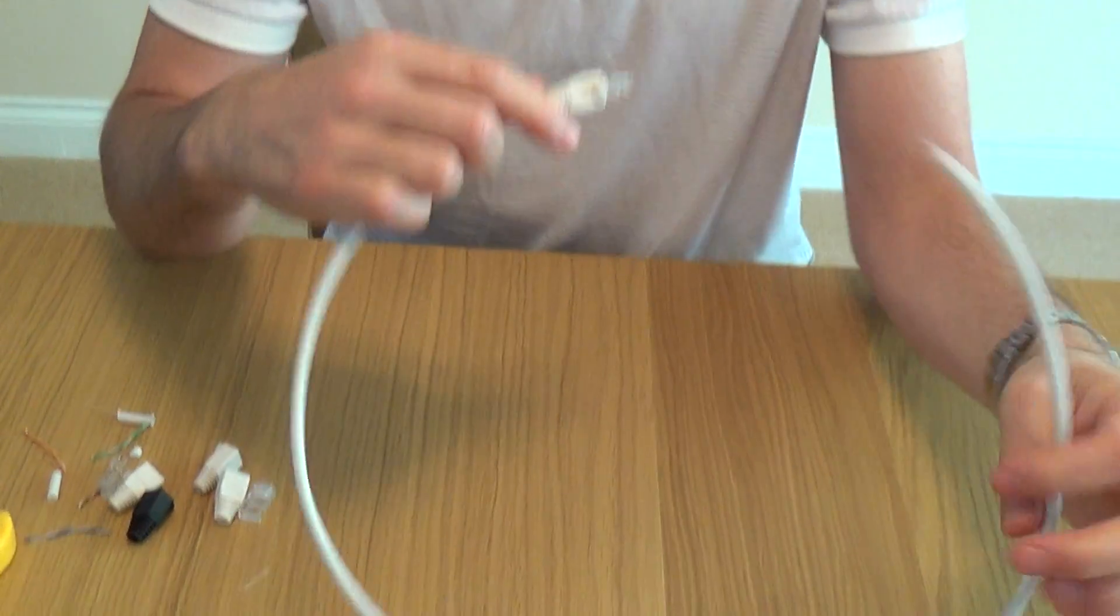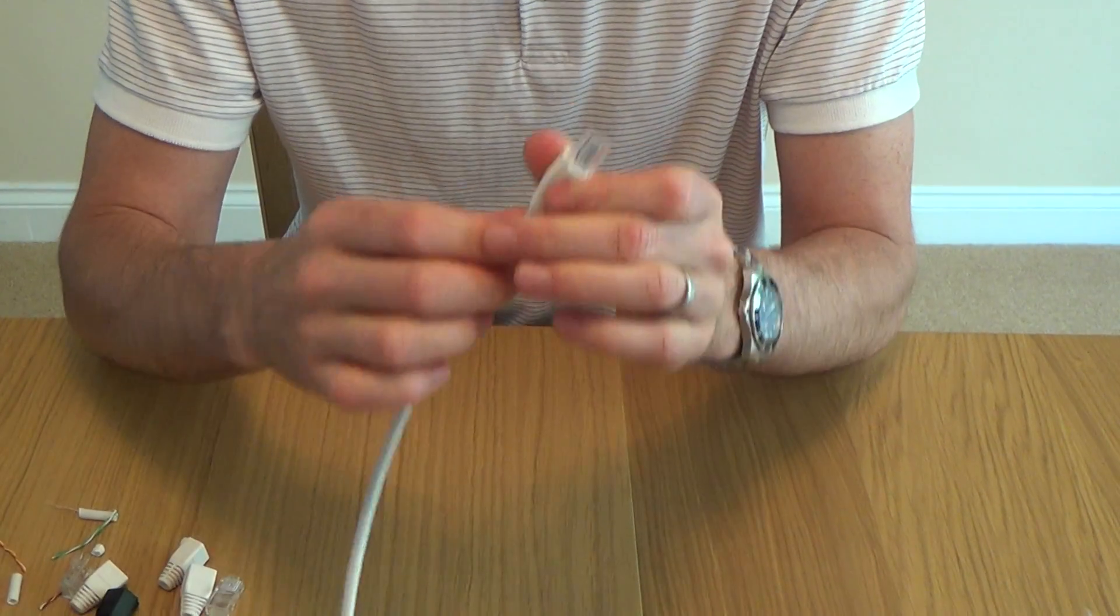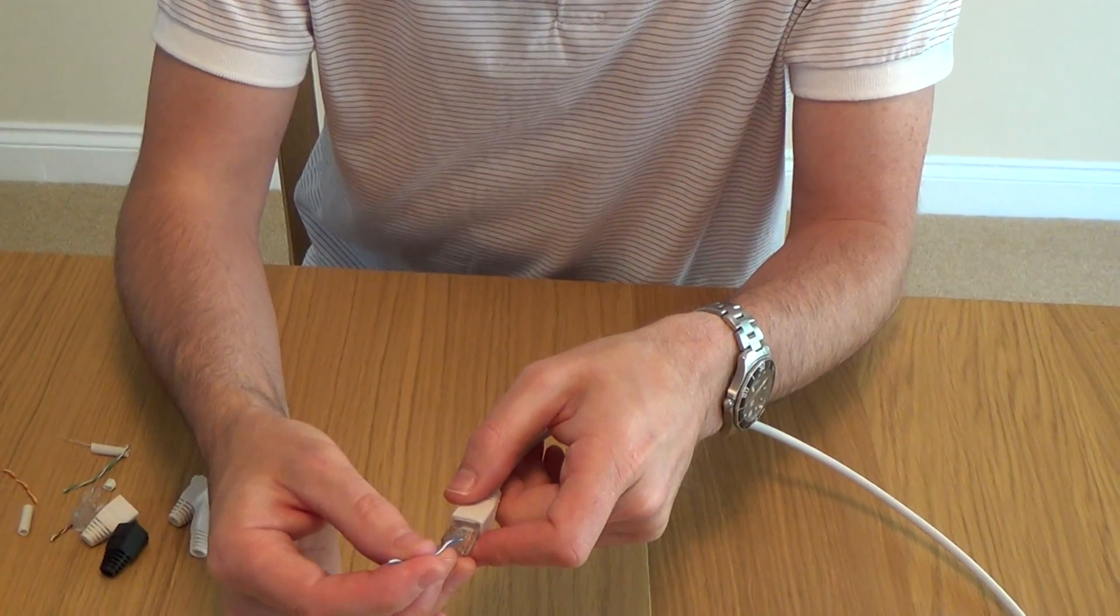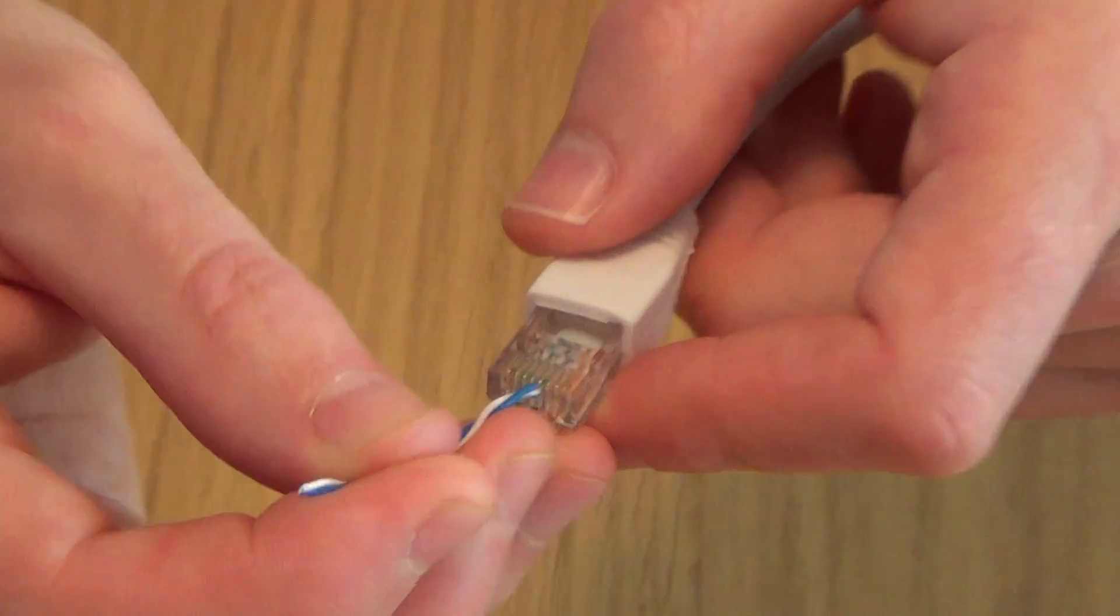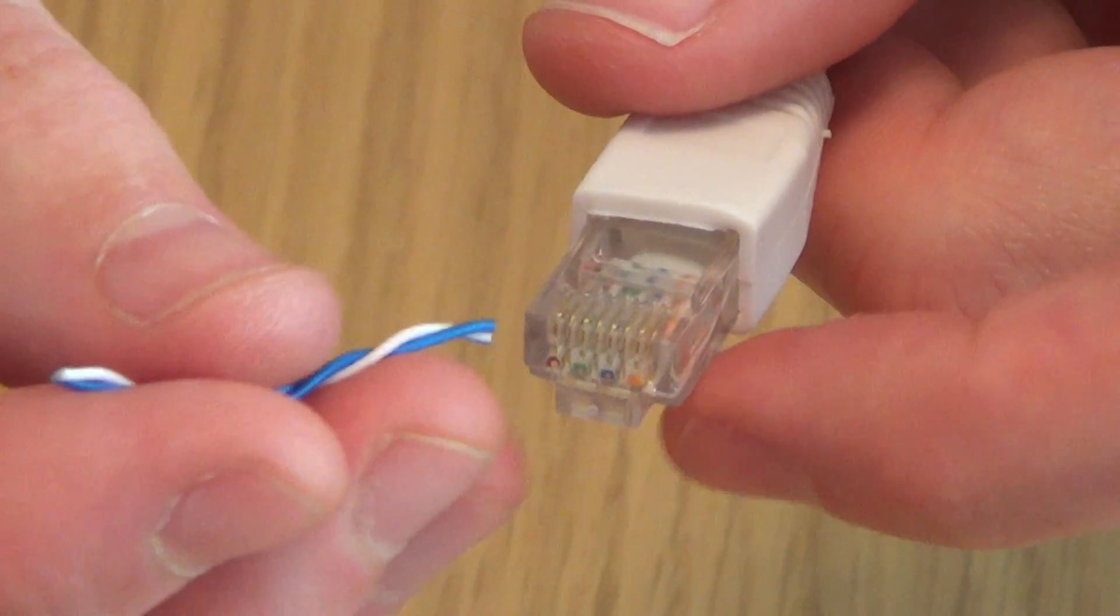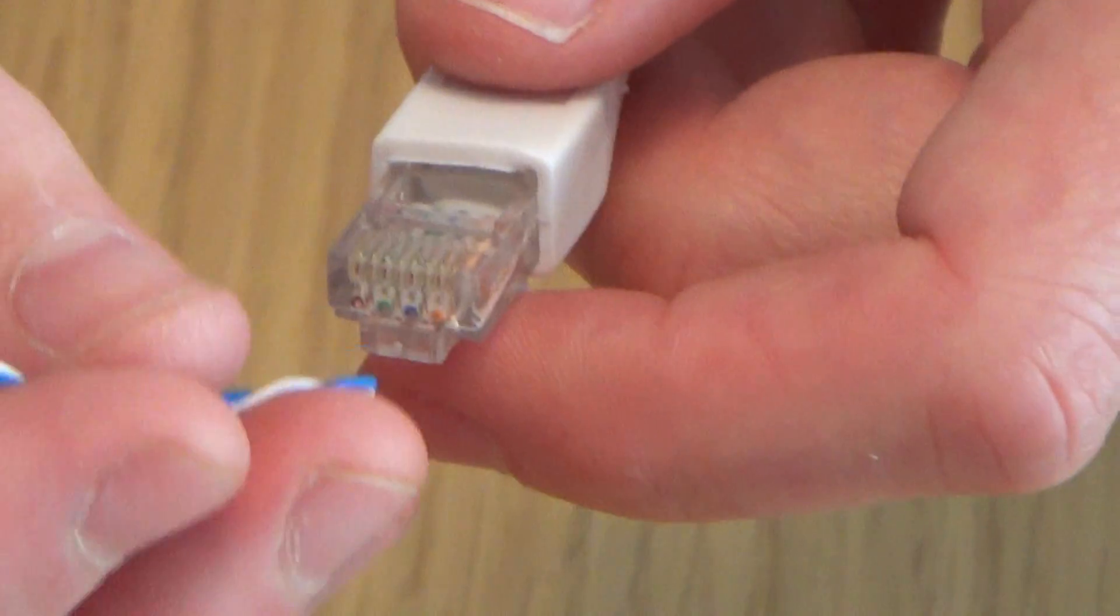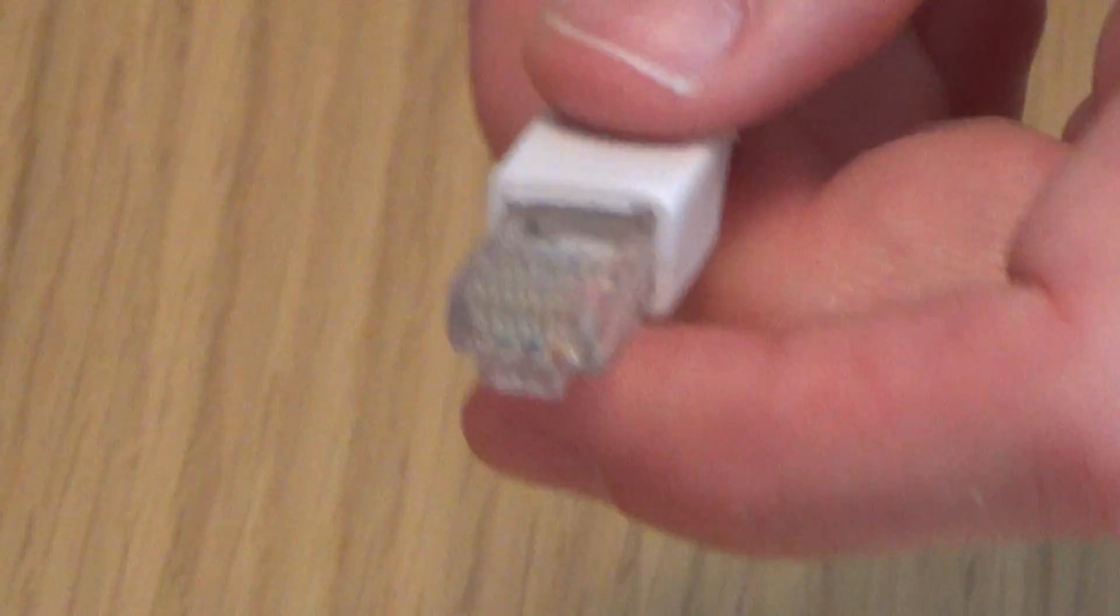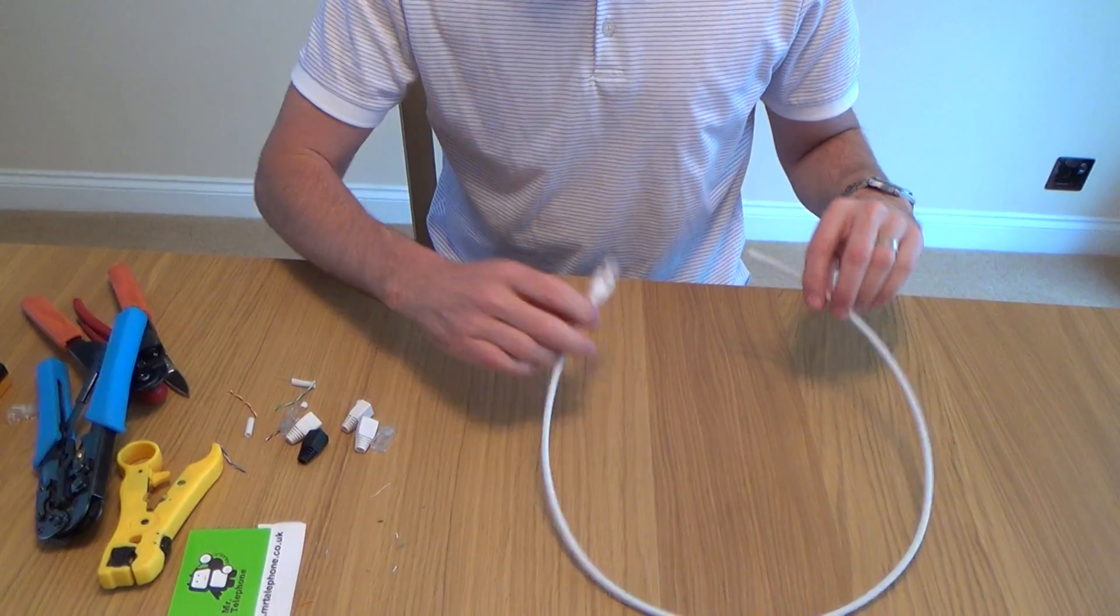That's what they're commonly known as. They're actually an 8P8C, which means it's got eight positions and eight conductors. So if you count there, there's basically eight positions and there's actually eight conductors. So when you're dealing with RJ11 plugs, they're often called 6P6C or 4C. But with this one, it uses all eight pins.